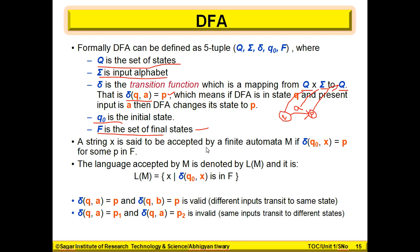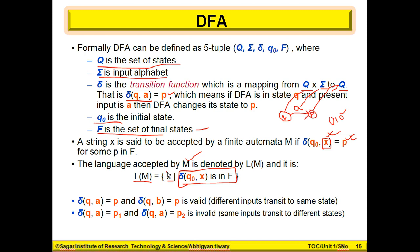A string is said to be accepted by a finite automata if, starting from Q0 with input string X — where X can be a string like 0, 1, 0 — after reading this string, we can reach a final state. If we reach the final state by reading X, then X is accepted by the machine, and X is the language of this machine.